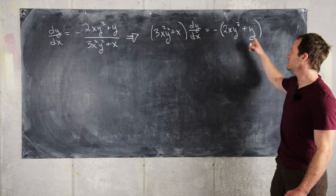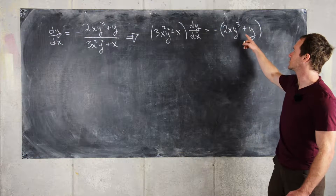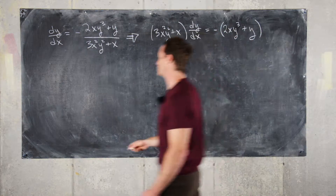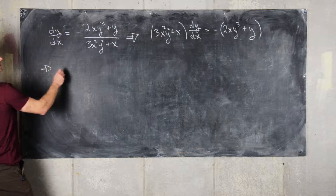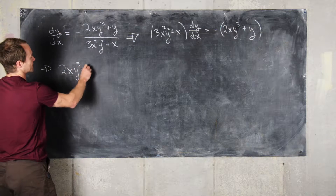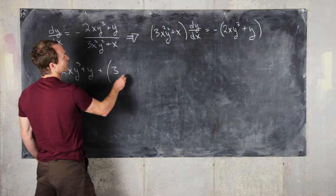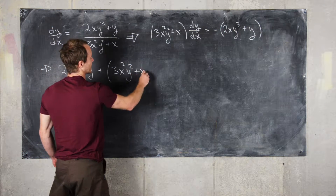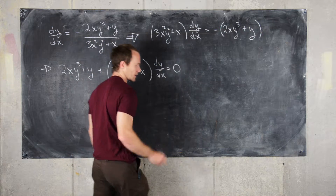Now looking at this, we should solve for zero — move the left-hand terms over to the other side of the equation. That gives us 2xy³ plus y plus (3x²y² plus x) dy/dx equals zero.